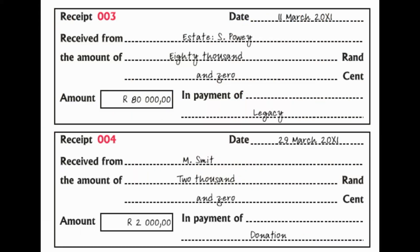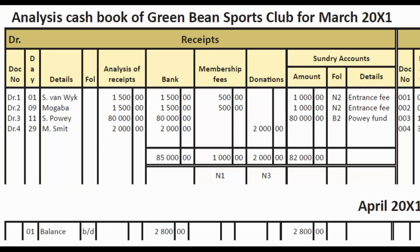Receipt number three: we received from the estate of S Powie an amount of $80,000 in payment of a legacy. We do the entry on the debit side of the cash book under receipts — S Powie, analysis $80,000, bank $80,000. We are going to invest that money, so we open an account for the Powie Fund. We debit bank and credit Powie Fund. In the analysis cash book: analysis $80,000, bank $80,000, sundry accounts $80,000, with the detail 'Powie Fund.'